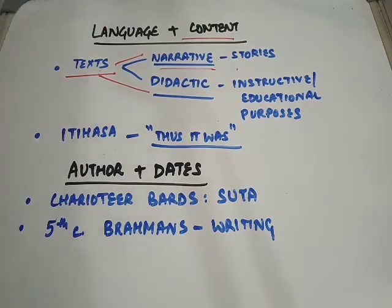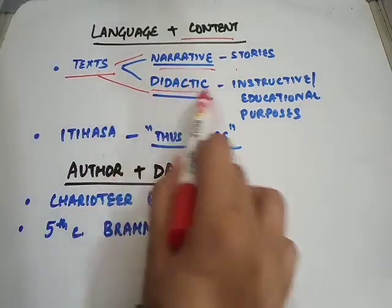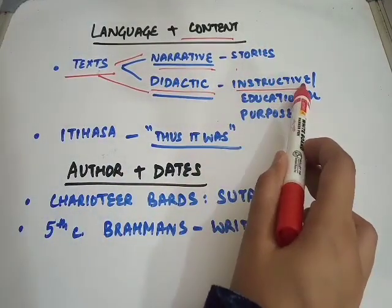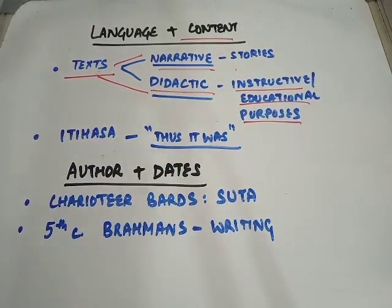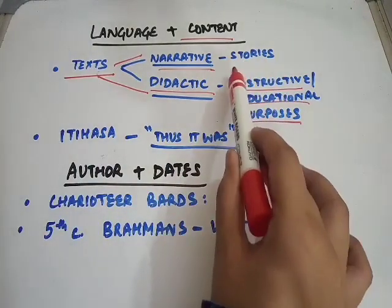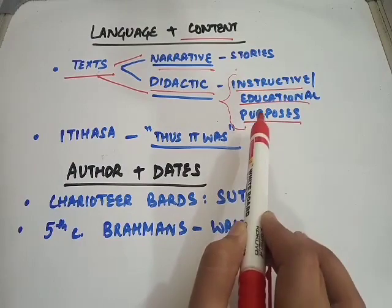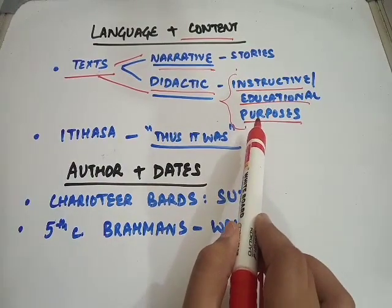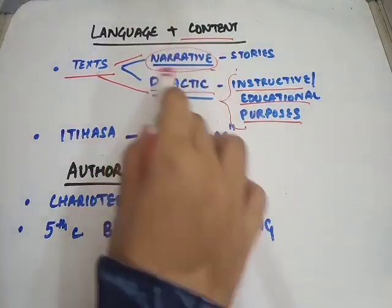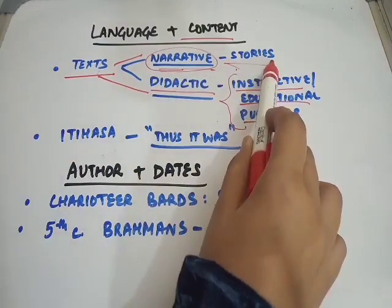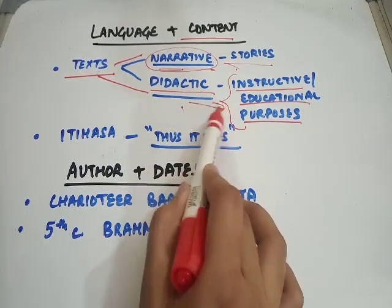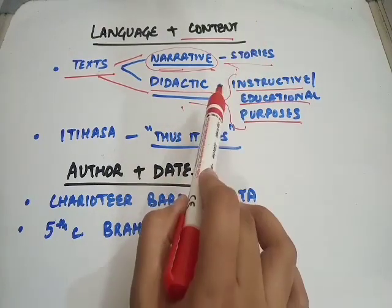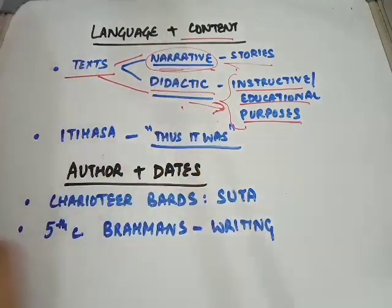In narrative texts we usually find stories and tales — kahani ya katha. On the other hand, didactic texts are those which are instructive or educational in nature. Social norms are usually written in didactic texts. For example, Panchtantra can be classified as narrative because it consists of stories, whereas the Vedas are written for instruction and educational purposes, so they fall under didactic texts.